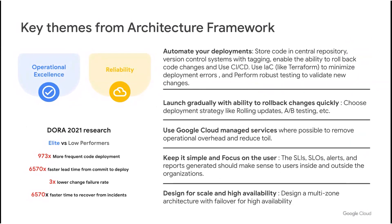Launch gradually with the ability to roll back any changes so you keep your systems healthy and users happy. Use Google Cloud managed services like GKE Autopilot, Managed Instance Group, Load Balancers, Cloud SQL, etc., that minimize your operational overhead. Design highly available systems tracking SLIs and define SLOs which focus on keeping your users happy. The Architecture Framework documentation covers many other best practices and design principles to help you optimize your deployments.